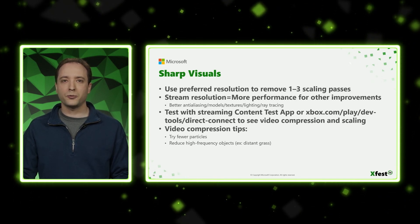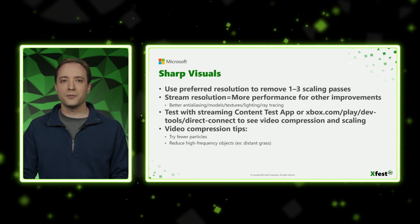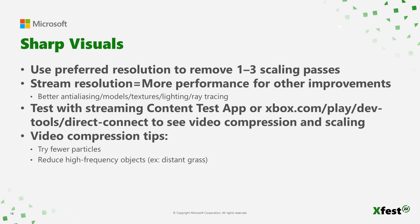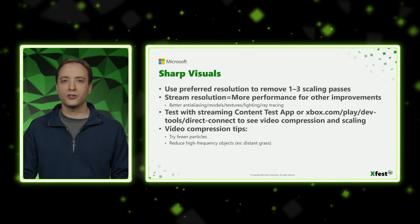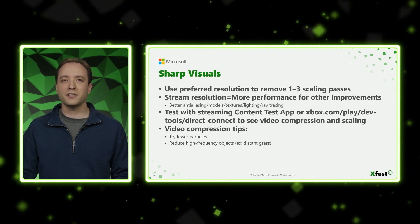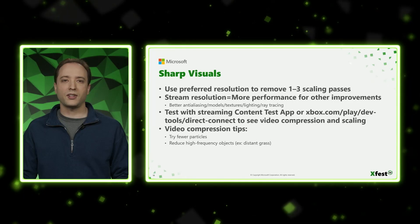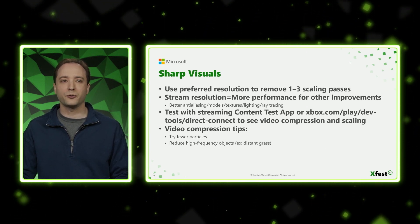Next up, I want to talk about sharp visuals briefly. A couple of tips that will make your visuals sharper while streaming. First, use the preferred resolution that you get from the Display Details API to remove extra scaling passes and any artifacts from that. Second, if you're lowering your stream resolution in order to get direct capture, that might leave you more performance in your game for other improvements — for example, you might be able to turn up anti-aliasing, load in better models or textures, use fancier lighting, or turn up ray tracing. We recommend testing with the Streaming Content Test App or our DevTools website to see video compression and scaling in your game for yourself. If you are seeing video compression artifacts, try fewer particles — sometimes having a whole bunch of particles floating around on screen can be hard on the encoder. And try reducing high-frequency objects — those are things that change a lot from pixel to pixel, like grass way off in the distance, which can also sometimes be harder on encoding.